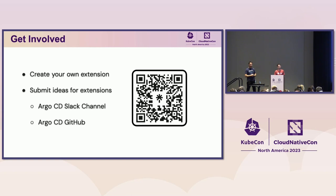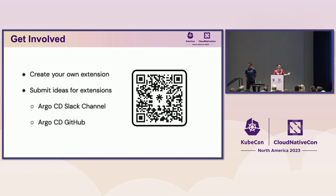Q: It sounds like there's very few extensions right now in the ecosystem — only two or three? A: Yes, the only ones we have developed are the rollouts extension, the timeline extension, and the metrics extension. So yes, very few. But if you have ideas, we're open to them.